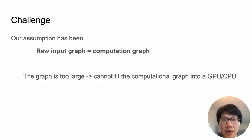However, we encountered challenges when working with GNNs using the above method. Our assumption has been that the raw input graph equals the computation graph. However, the graph can be too large to fit the computation graph into a single GPU or CPU.